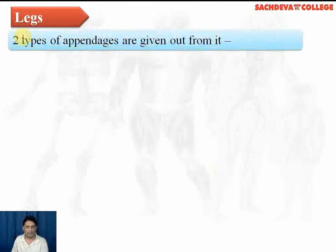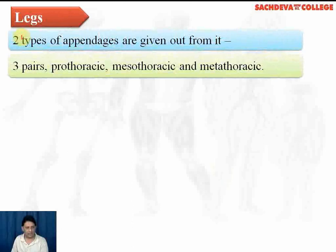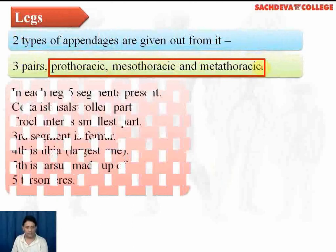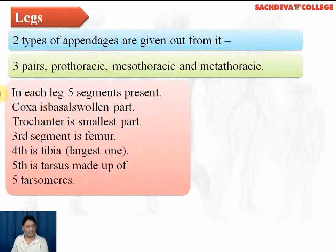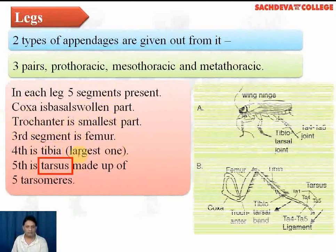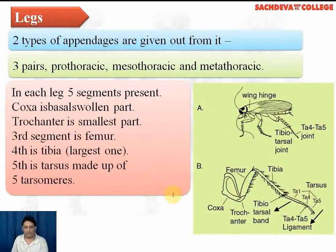Three pairs of legs are present in the cockroach — one pair each in the prothorax, mesothorax, and metathorax. Each leg contains five segments: the coxa (the most swollen part), trochanter (the smallest part), femur, tibia (the largest part), and tarsus. These segments continue from coxa through trochanter, femur, tibia, and then tarsus.